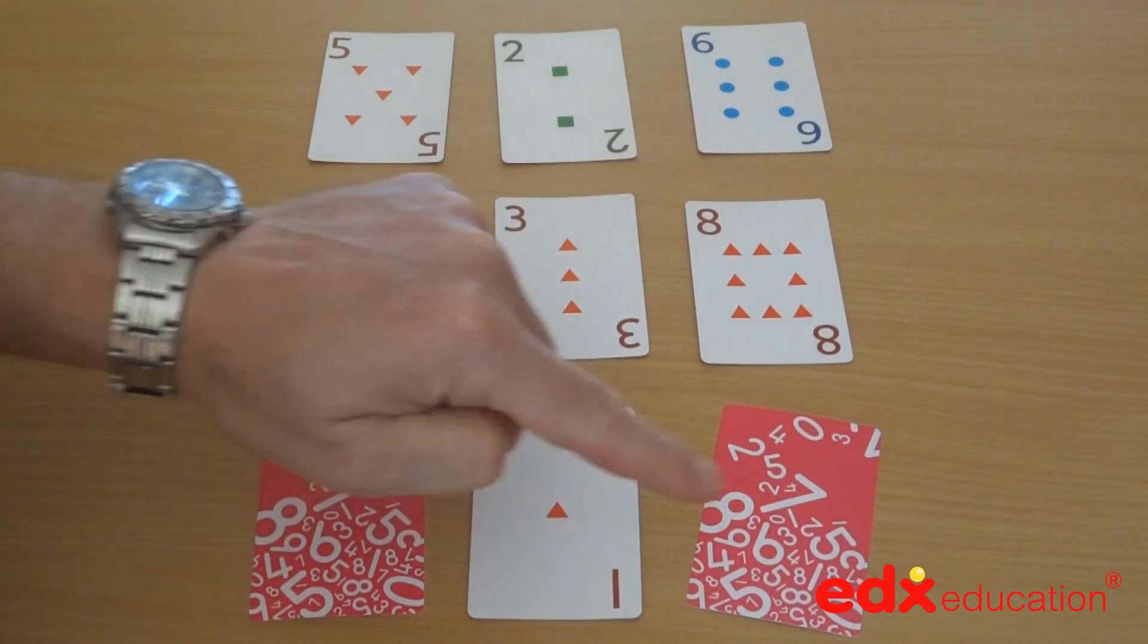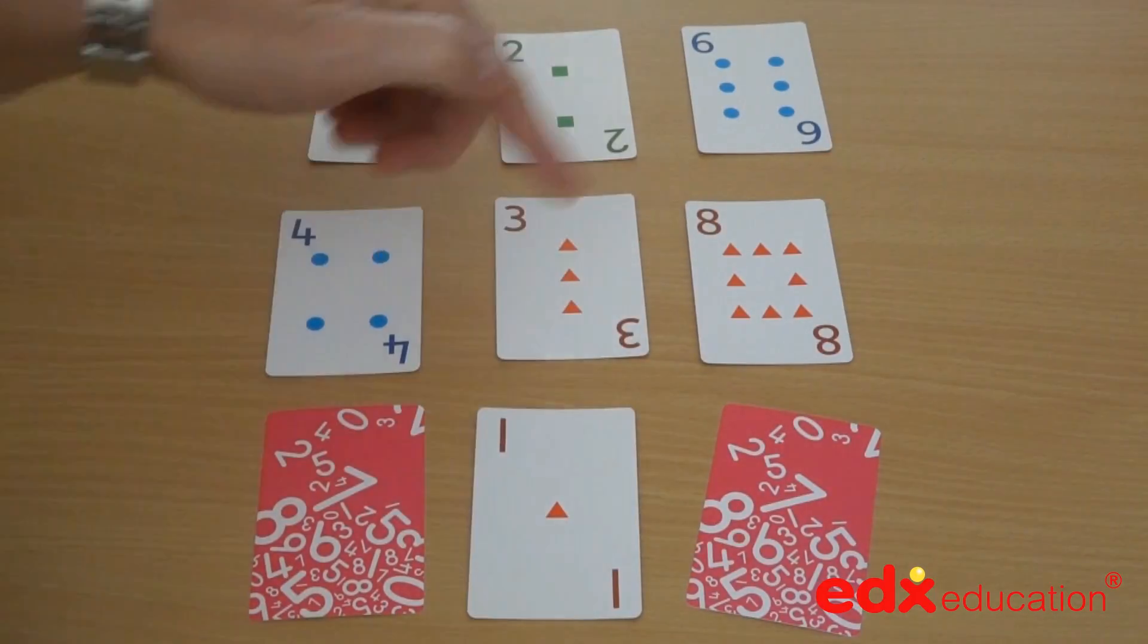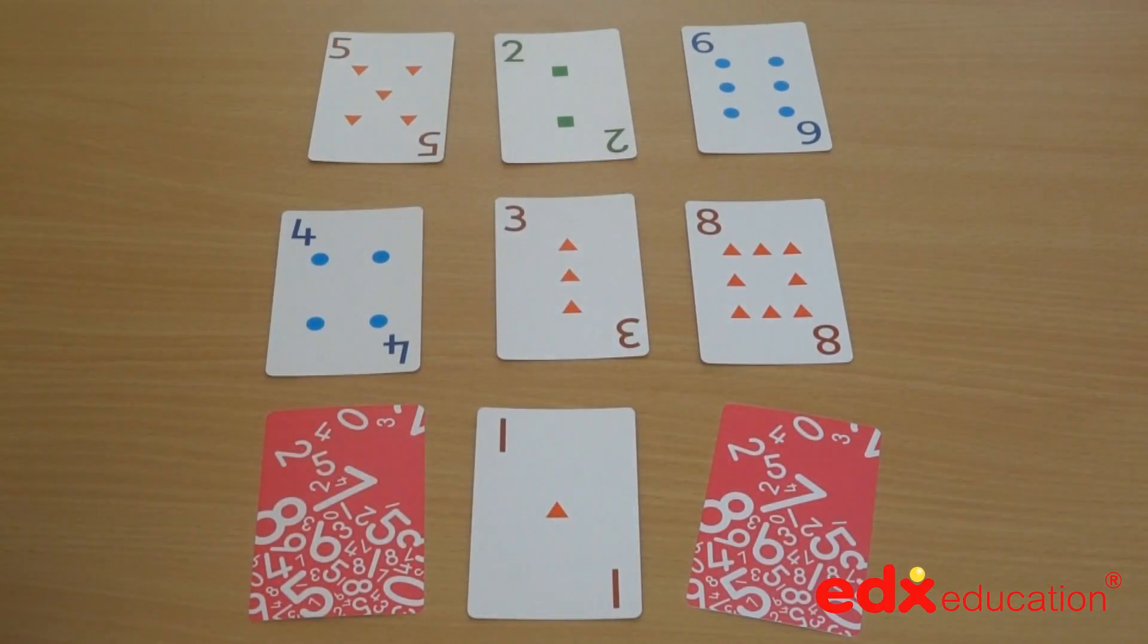Remember, if you get three in a row, three in a column or a diagonal, you win that game. You could vary it a bit more. Instead of saying half of, you could say 50% of or divide by two. You could vary the language when you're playing this sort of game.